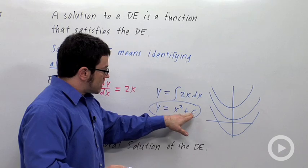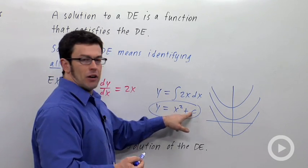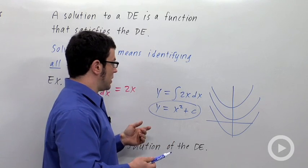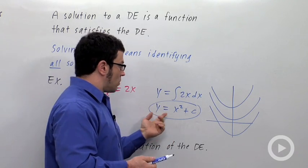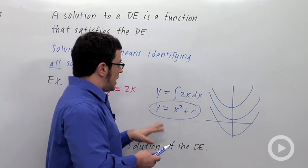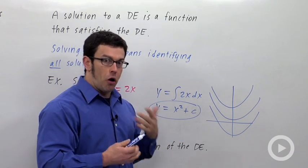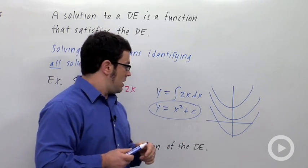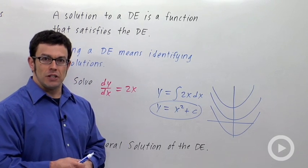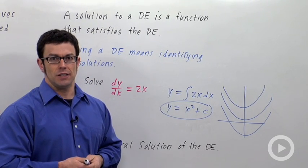We get a different solution for every value of c that we plug in. For example, c could be 0: y equals x squared is a solution of this differential equation. But y equals x squared plus 100 is also a solution. So in one formula we have a representation of all the solutions — infinitely many of them. That's called a general solution of the differential equation, and that's going to be one of our goals when we're solving differential equations.